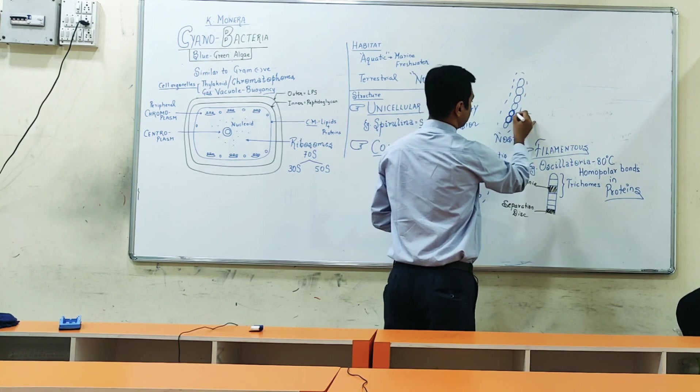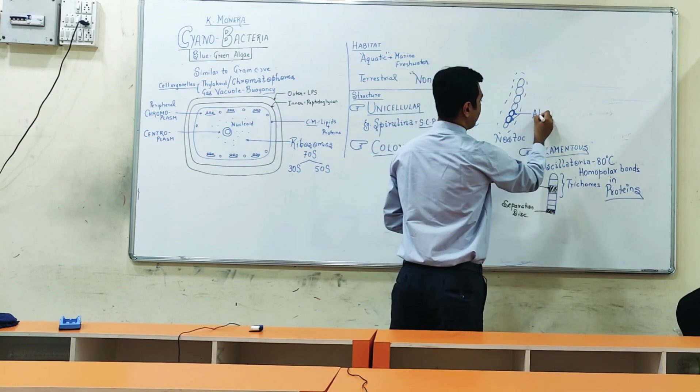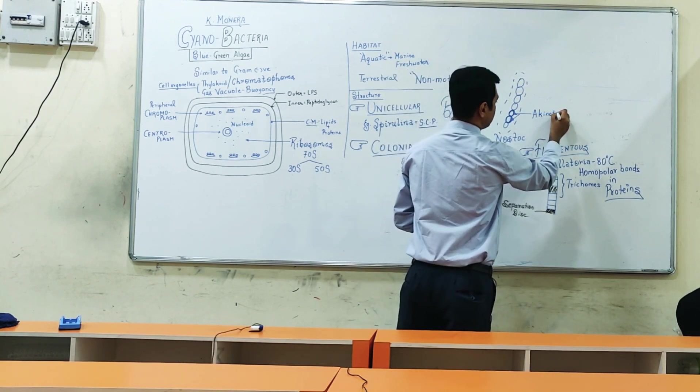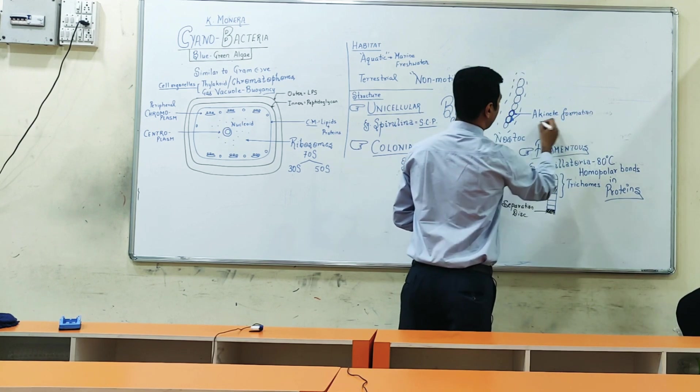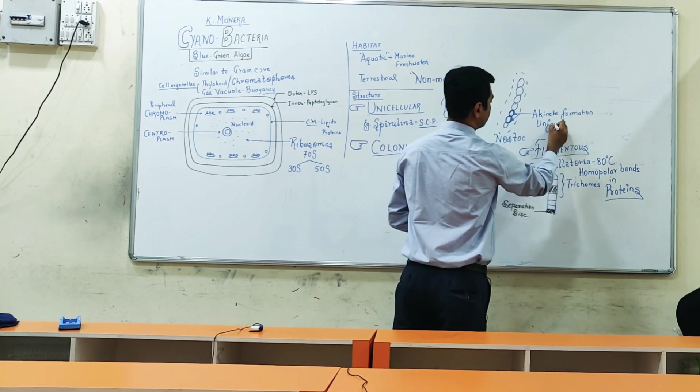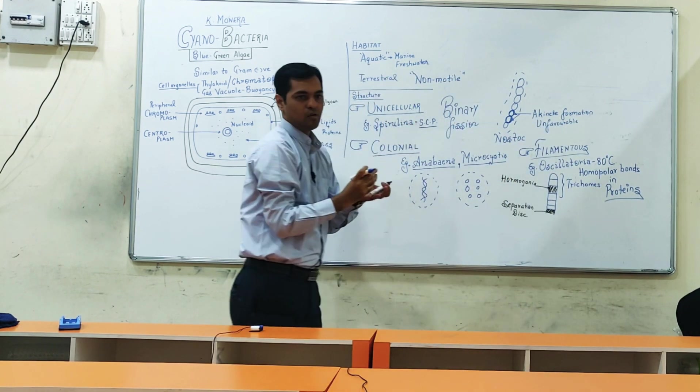This thickened cell wall structure is called akinete formation. This akinete formation is observed mainly during unfavorable conditions. During unfavorable conditions, some of the colonial forms can develop a thick cell wall around themselves which provides them protection.